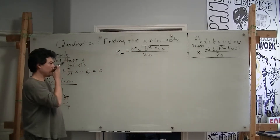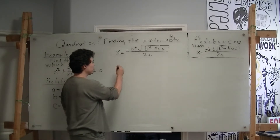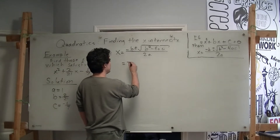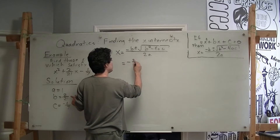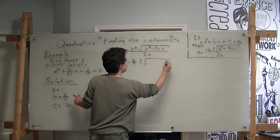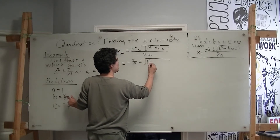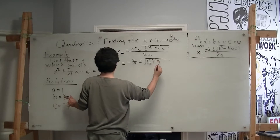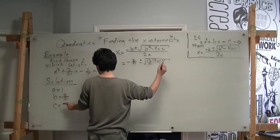And then we can use the values that we've got over here to start populating this equation. Negative b, where b is 2 over 21.